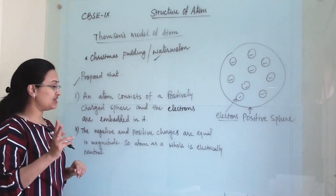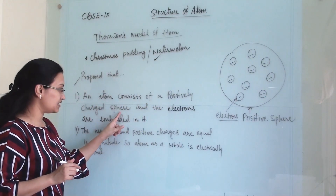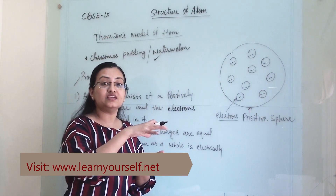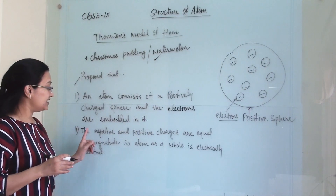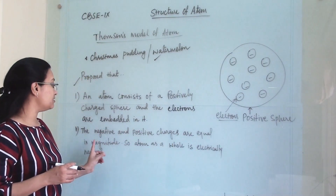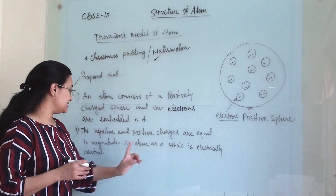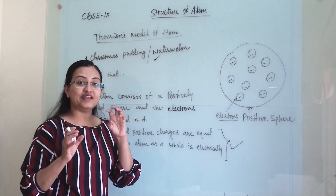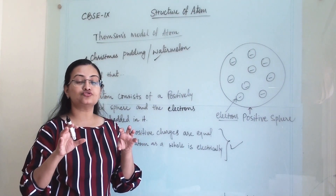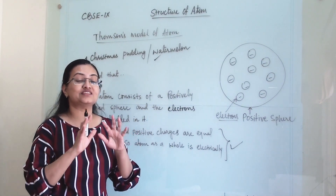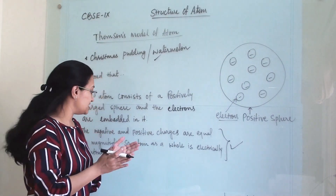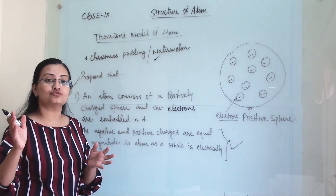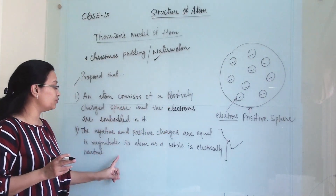Thomson proposed two main points. First, an atom consists of a positively charged sphere and the electrons are embedded in it, evenly distributed throughout. Second, the negative and positive charges are equal in magnitude because the atom as a whole is electrically neutral. Whatever magnitude the negative particles carry, the same magnitude of positive charge is also present in the atom.